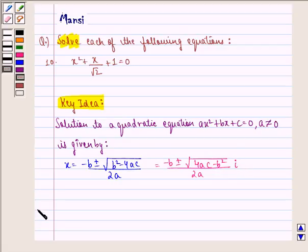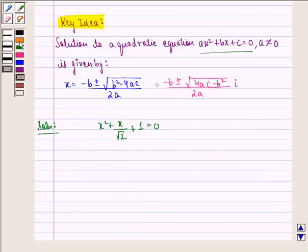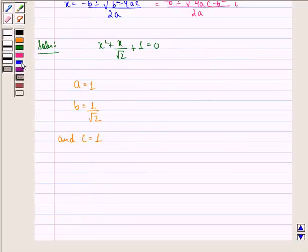Now let us start with the solution to this question. The equation given to us is x square plus x by root 2 plus 1 equal to 0. If we compare this equation with ax square plus bx plus c equal to 0, we get a equal to 1, b equal to 1 by root 2, and c equal to 1.